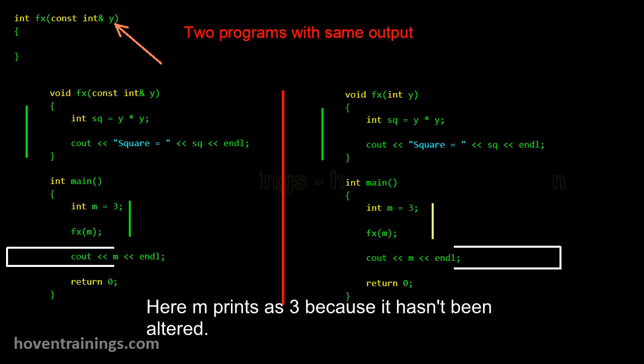Here m prints as 3 because it hasn't been altered, because it was copied and passed to the function.